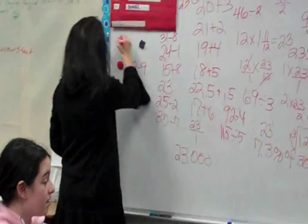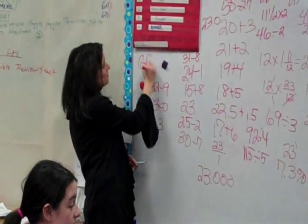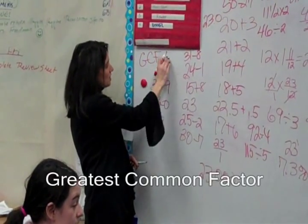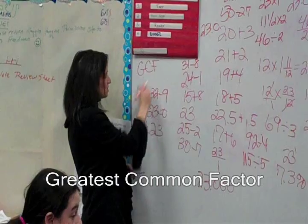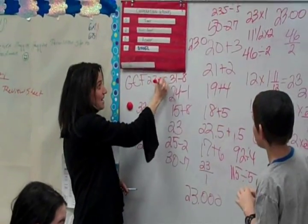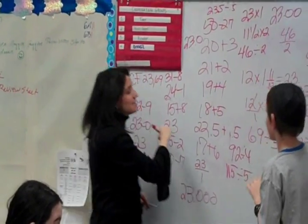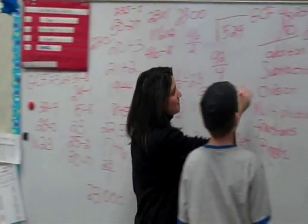23 and 69 — greatest common factor. What's the largest number that goes into both 23 and 69? I'd say it was 23.